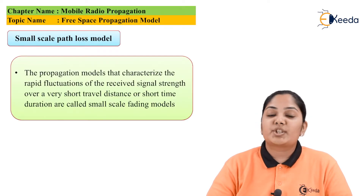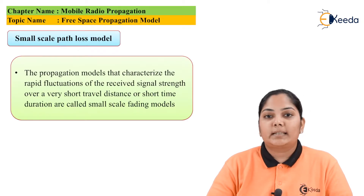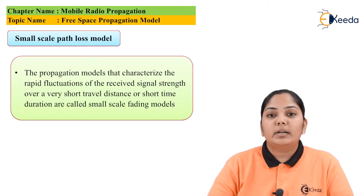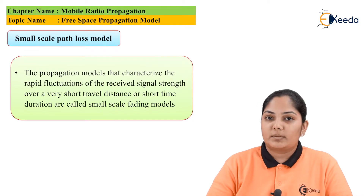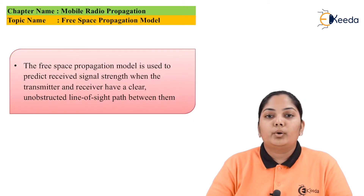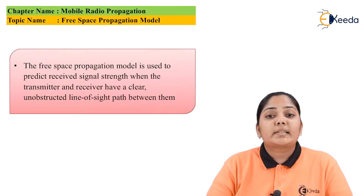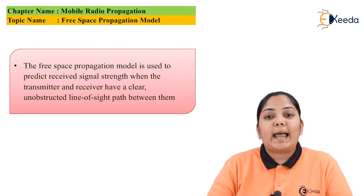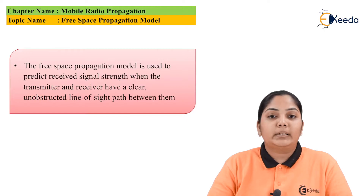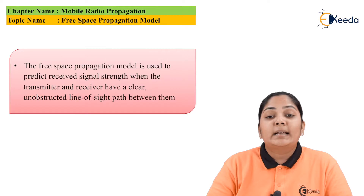The propagation models that are characterized by a rapid fluctuation in the signal in a shorter time duration or a shorter distance between the transmitter and the receiver are called small scale path loss models. Now we will move on to the free space propagation model. In the free space propagation model, it is assumed that there is a line of sight between the transmitter and receiver — meaning there is no obstruction — and we are able to calculate the signal strength of the received signal.